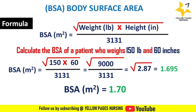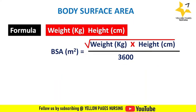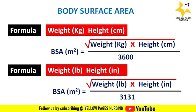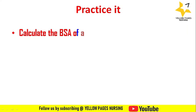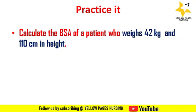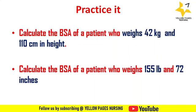So these are the two formulas: when weight is in kilograms and height in centimeters, divide by 3600; when weight is in pounds and height in inches, divide by 3131. Here are some practice examples: calculate BSA for a patient weighing 42 kg and 110 cm in height; and for a patient weighing 155 lb and 72 inches. You can mention your answers in the comment box.